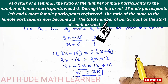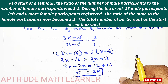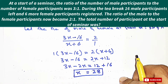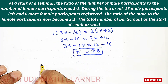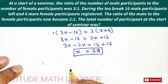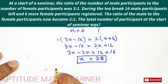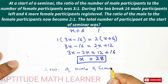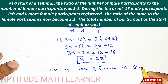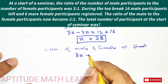Now the question asks for the total number of participants at the start of the seminar. Therefore, at the start, the number of males was 3x and the number of females was x, so the total is 3x plus x.